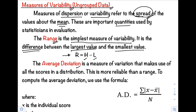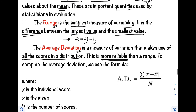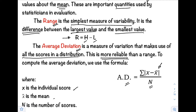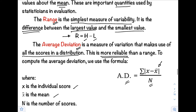Next, we have the average deviation. It is a measure of variation that makes use of all the scores in a distribution, and it is more reliable than the range. To compute the average deviation, we use the formula: AD equals the summation of |x minus x-bar| over n, where x is the individual score, x-bar is the sample mean, and n is the number of scores. So before solving the average deviation, you need to find the mean first.